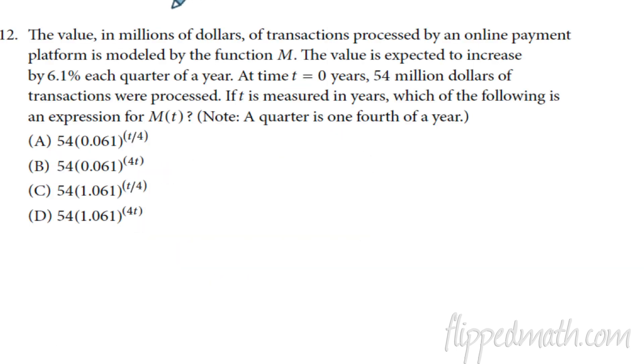Okay, on to number 12. Number 12, we're testing your knowledge of an exponential equation. Can you figure out which one it is? And so what I like to do first is look at our choices here. Let's figure out the base first. We have two choices for the base. It's either 0.061 or 1.061. And so when you read the problem, it says that the value of the function, the value, it increases by 6.1% each quarter.